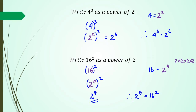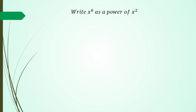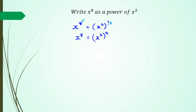This concept is really important because later in algebra you'll have to manipulate algebraic terms like this. For example: write x to the power of 8 as a power of x squared. We're looking for: x to the power of 8 equals x squared to the power of what? Working backwards, the answer is 4, because 4 times 2 equals 8. So x to the power of 8 equals x to the power of 2, to the power of 4.